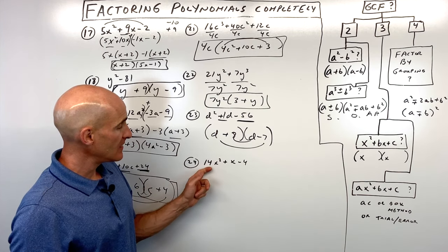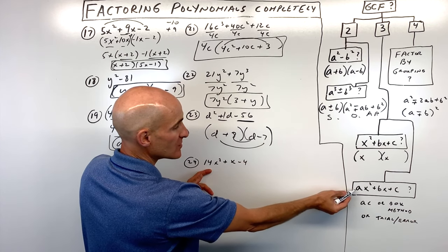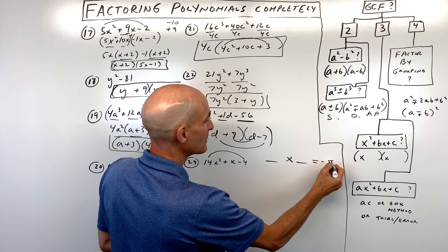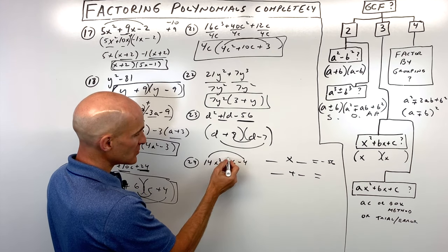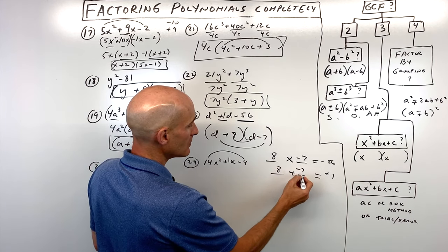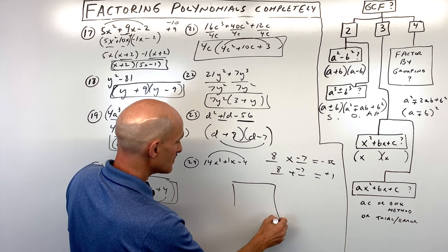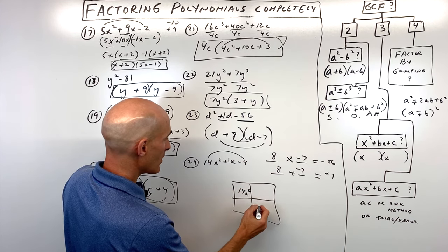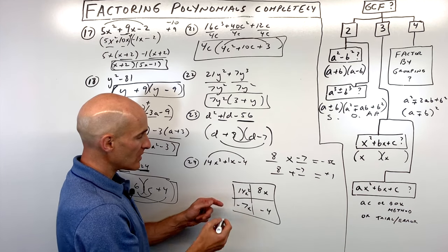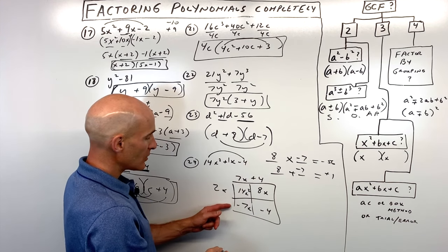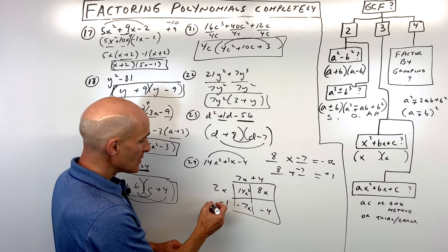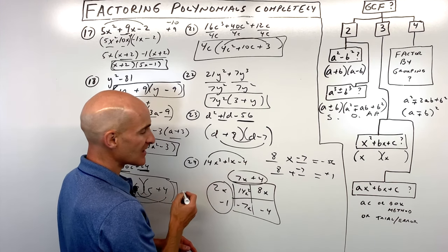Number twenty-four is a trinomial, no greatest common factor, leading coefficient not 1. Let's do the box method. A times c: what multiplies to negative 56 but adds to positive 1? That's positive 8 and negative 7. Draw a box: put 14x squared in one corner and negative 4 in another, then 8x and negative 7x in the other cells. Factor out 2x from the first row — that gives 7x plus 4 — and factor out negative 1 from the second row. So fully factored: 2x minus 1 times 7x plus 4.